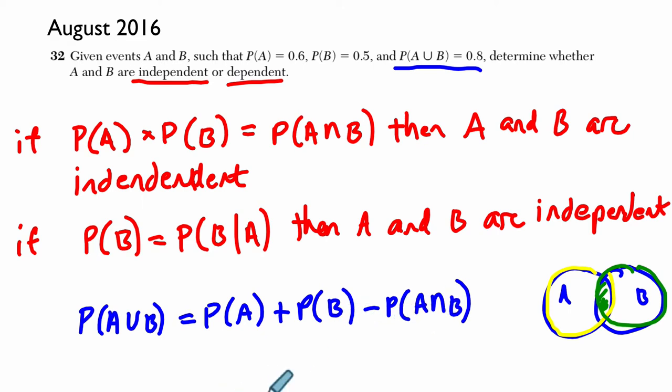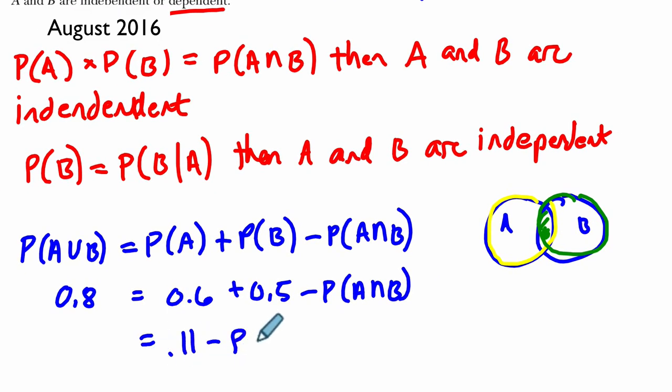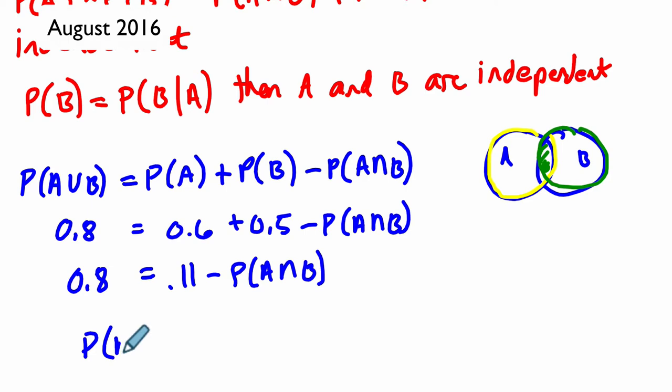This is useful to us because here we know that the probability of A or B happening is 0.8. We know that A is 0.6 and we know that B is 0.5. So we want to find what the intersection equals. So 0.6 plus 0.5 is 0.11 minus something, probability of A and B equals 0.8. Now I'm just thinking, well, I know 0.11 minus 0.3 is 0.8. So I know the answer now. I know that the probability of A and B is 0.3.